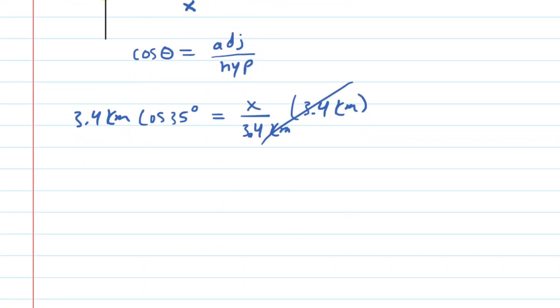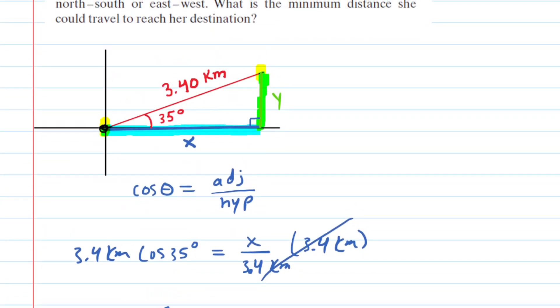And then we would pick up our calculators, and we would punch in 3.4 times the cosine of 35. We get 2.79, and this will be in kilometers. That's the approximate value of x, so we can go back to our drawing and label that.